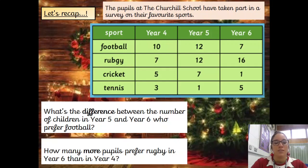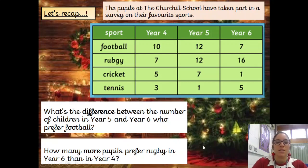Next question: how many more pupils prefer rugby in Year Six than Year Four? Again, we're finding out how many more. So we can either start at Year Four rugby, which is 7 children, and count on to 16. Or we can subtract 7 from 16, which gives us 9 children.